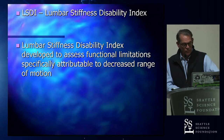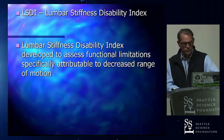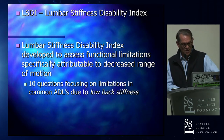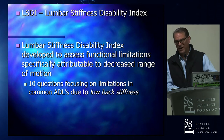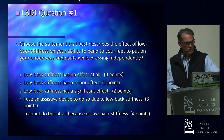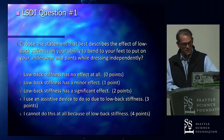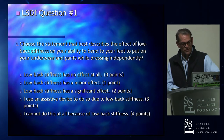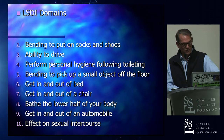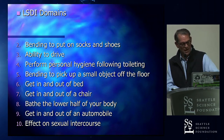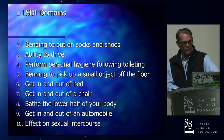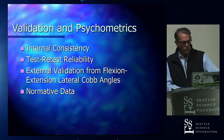So we developed the Lumbar Stiffness Disability Index, named in analogy to the Oswestry Disability Index and very similar in structure. It has 10 functional domains, a range of zero to four per question, but instead of referring the patient to the effects of low back and leg pain, we refer them to the effects of low back stiffness on performing these functions. For example: choose the statement that best describes the effect of low back stiffness on your ability to bend to your feet and put on underwear and pants while dressing independently.